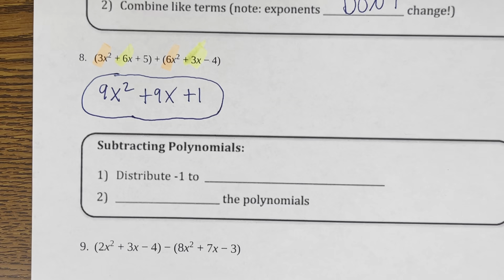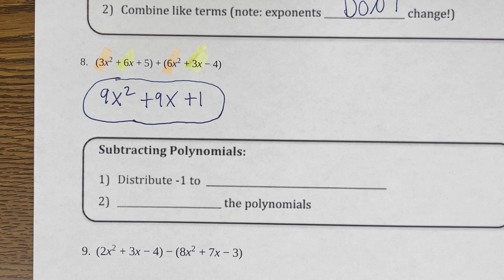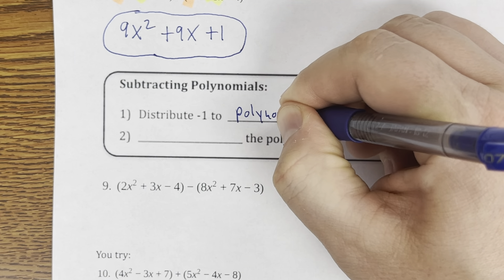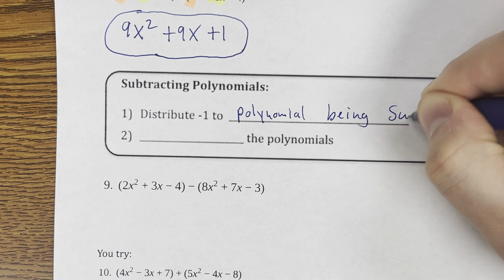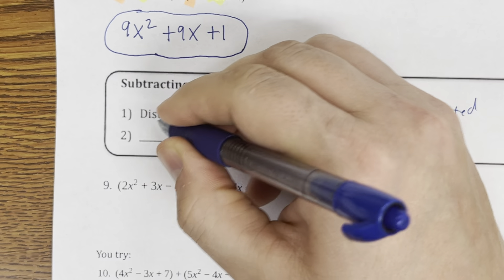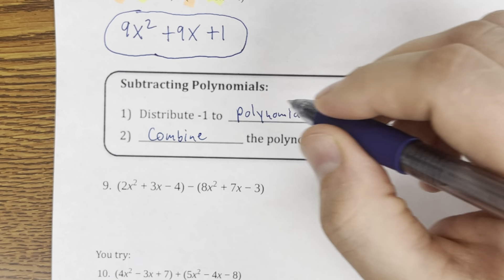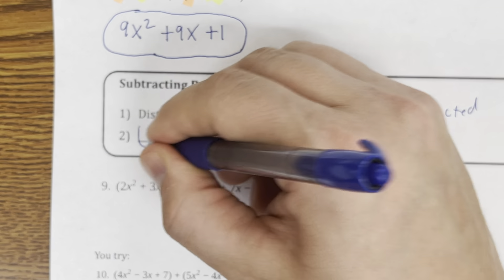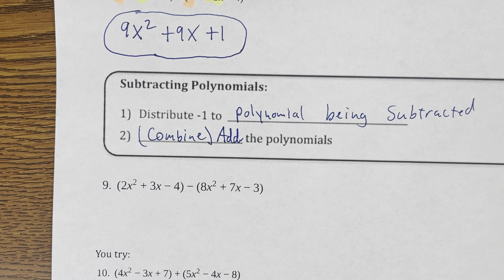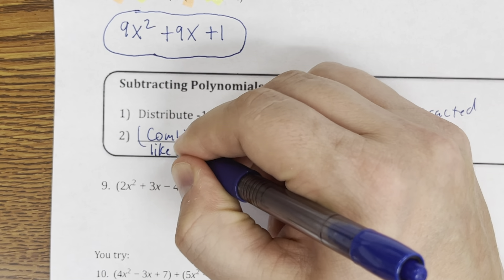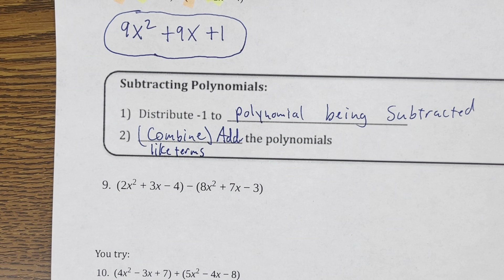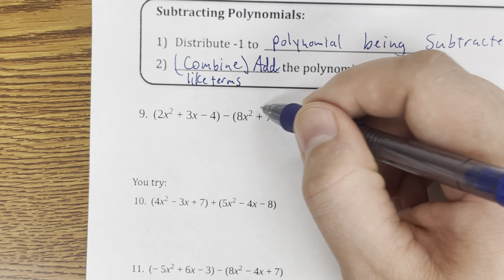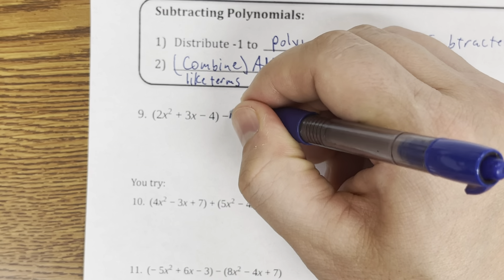Subtracting polynomials is a little tougher. First, we're going to distribute negative 1 to the polynomial being subtracted, then we'll combine like terms. Don't be lazy on these — I don't want to see you just putting a minus sign. We have to distribute. The first polynomial does not change.